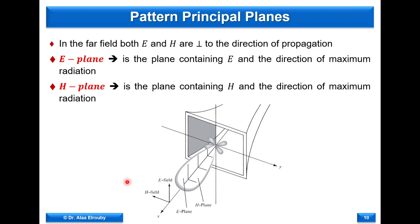When dealing with antennas, we often read about E-plane and H-plane. In the far field, the antenna radiates a transverse electromagnetic (TEM) wave, where E and H are perpendicular to each other and both perpendicular to the direction of propagation. The E-plane is defined as the plane containing the electric field and the direction of maximum radiation. The H-plane is defined similarly using the magnetic field.